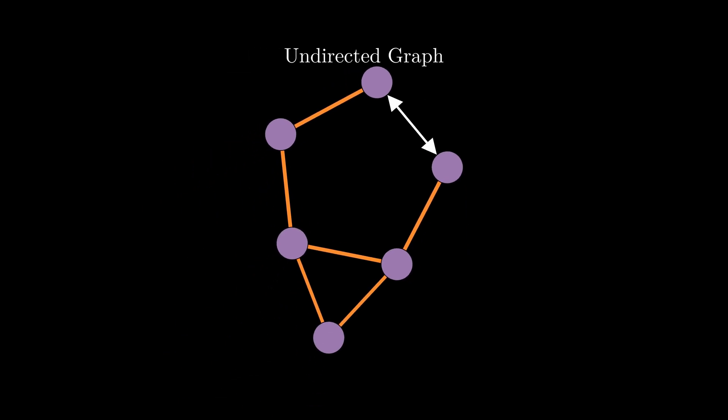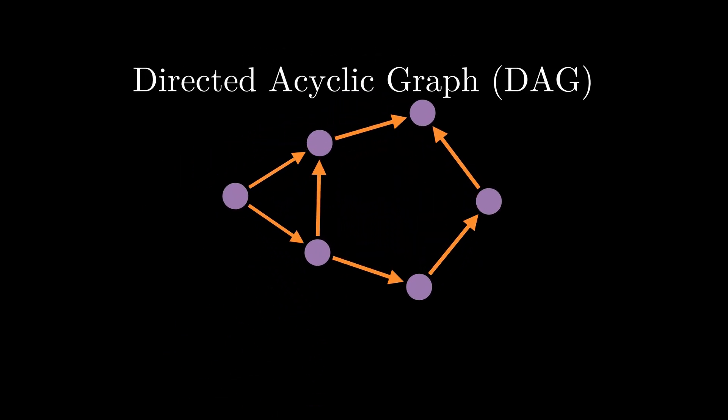So for topological sort to be applicable, the graph needs to be a directed graph. The other constraint is that the graph must be acyclic. And acyclic is just a fancy way of saying that the graph contains no cycles.